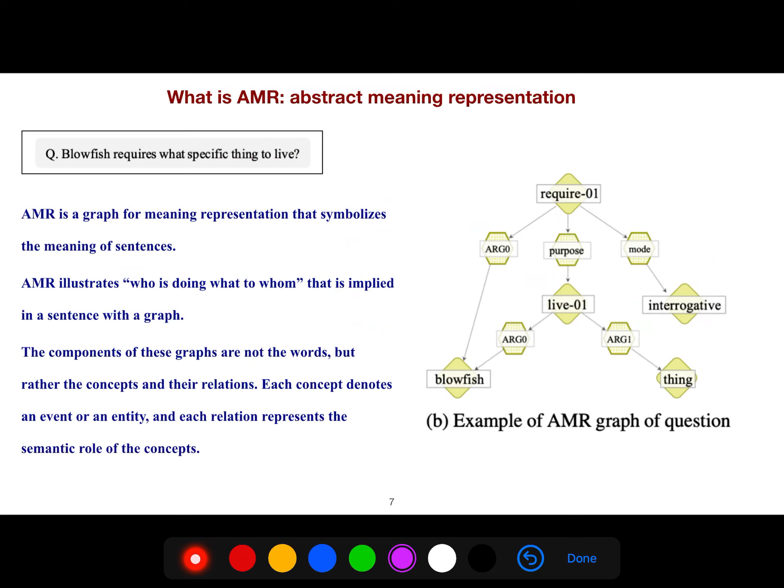AMR is a graph for meaning representation that symbolizes the meaning of sentences. AMR illustrates who is doing what to whom. It has arc zero, arc one, and some arc, and then something that are non-arc. I think AMR is much more general than semantic role labeling because semantic role labeling is very naive in comparison to the power of AMR. That's why I like AMR because it's a combination of syntactic representation and semantic stuff and you get everything from that.